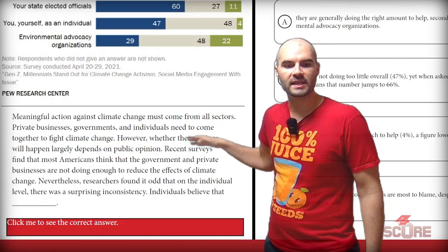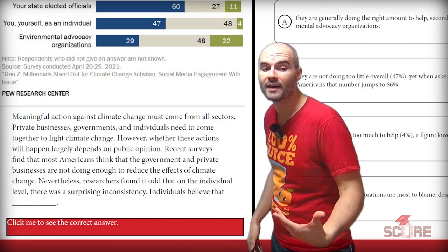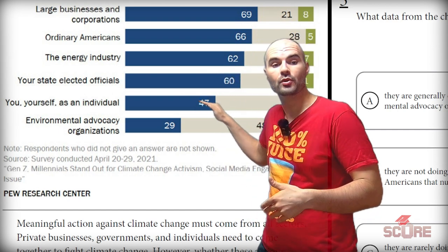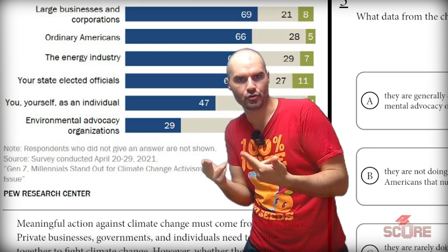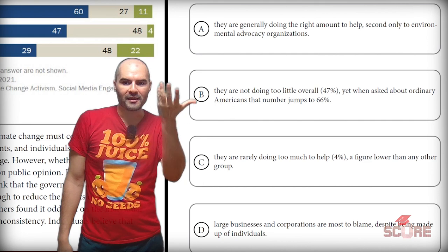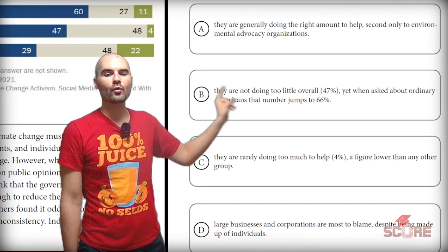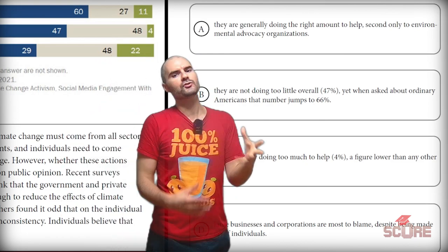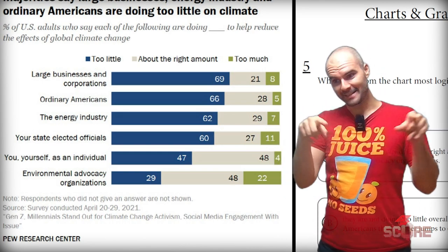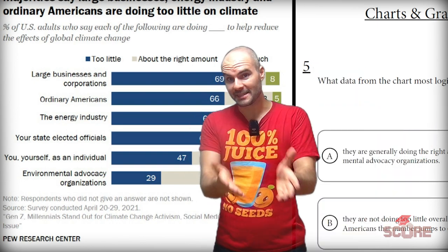Recent surveys find that most Americans think the government and private businesses are not doing enough to reduce the effects of climate change. Nevertheless, researchers found it odd that on the individual level, there was a surprising inconsistency. One thing I noticed is that individuals are also ranked in this data — 'you yourself as an individual.' Answer A says they're generally doing the right amount, second only to environmental advocacy organizations — there's nothing inconsistent about that. B says they are not doing too little overall at 47%, yet when asked about ordinary Americans, that number jumps to 66%. That does seem like an interesting inconsistency — most people think they're doing a better job than the people around them. There's a disconnect between people's perceptions of themselves and of others. B is our best answer.